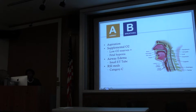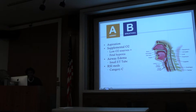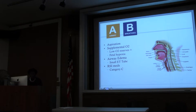If you were wanting to place a 7.5 ET tube, you may want to go down either 0.5 or one size. Your RSI medications — in terms of paralytics and sedatives — do cross the placental barrier, so we should consider what we use, ultimately looking at the mother as being the priority.